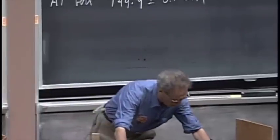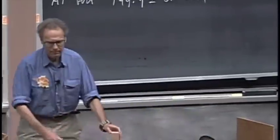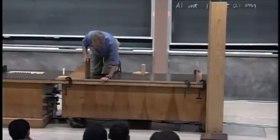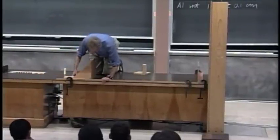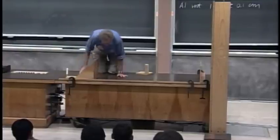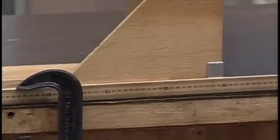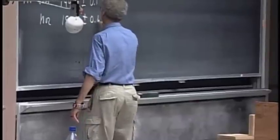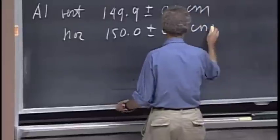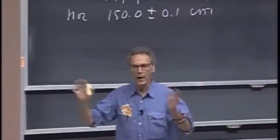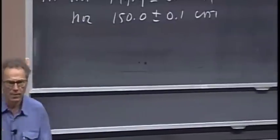Now we're going to measure the bar horizontally, for which we have a setup here. The scale is on your side. So now I measure the length of this bar: 150.0 horizontally — 150.0, again plus or minus 0.1 centimeter. So you would agree with me that I am capable of measuring plus or minus one millimeter. That's the uncertainty of my measurement.